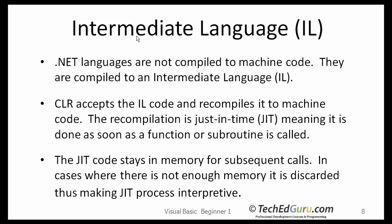The intermediate language: the .NET languages are not compiled to machine code. They are compiled to an intermediate language, or IL. CLR, or the Common Language Runtime, accepts this IL code and recompiles it to the machine code. The recompilation is just-in-time, or JIT, meaning it is done as soon as a function or a subroutine is called. The JIT code stays in memory for subsequent calls. In cases where there is not enough memory, it is discarded, thus making the JIT process interpretive.